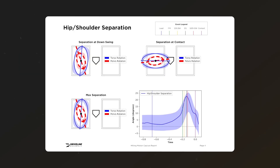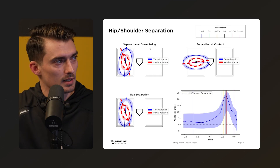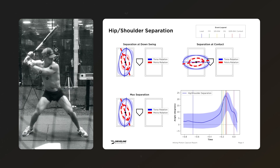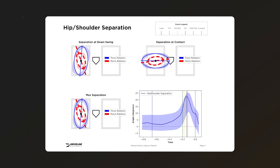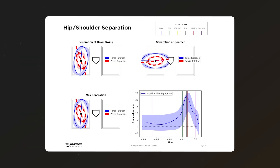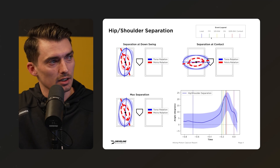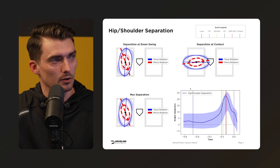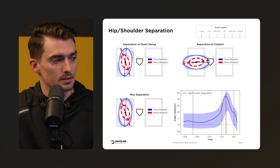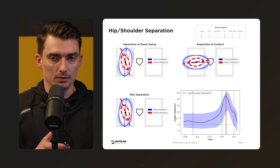Next we look at separation at different checkpoints throughout the swing: separation at downswing, max separation at peak hip-shoulder separation, and separation at contact. The time series graph uses the event legend as vertical lines. The axis shows time versus degrees of separation. It's more nuanced than simply the difference in pelvis rotation relative to torso rotation — it factors in the rotational stretch of the torso relative to the pelvis.